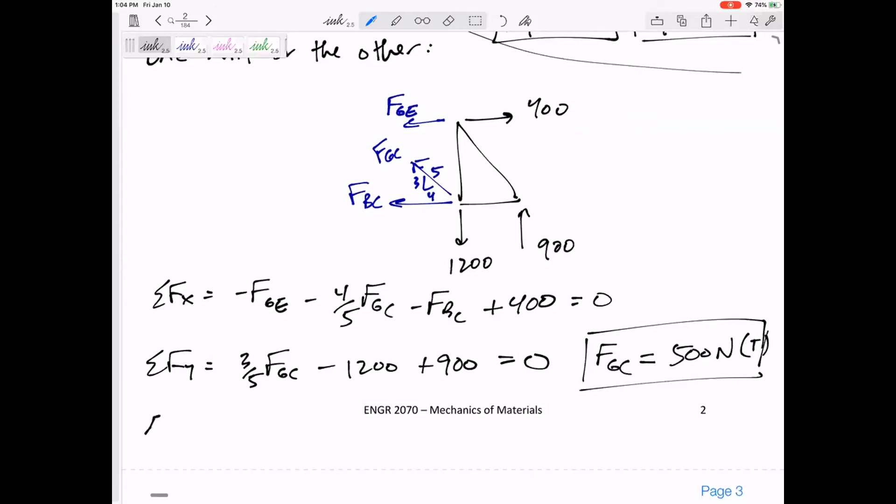Then our last equation is the easiest one to make mistakes on. You can sum the moments about any point. I might sum moments about point C because 1200 goes straight through it, FBC goes straight through it, FGC goes straight through it. So then it really just simplifies down to FGE.